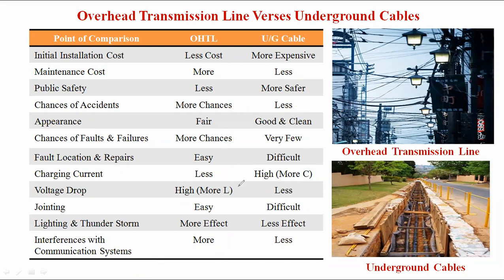Voltage drop: in overhead transmission lines the voltage drop is more due to inductance; in underground cable the voltage drop is less. Jointing of conductors in overhead transmission lines is easy — using the same aluminum conductor material, we simply twist the conductors. But in underground cable, jointing is very difficult. With the help of clipping and bolt-nut, we need to join the conductors, and as the operating voltage increases, the core size increases, making jointing even more difficult.